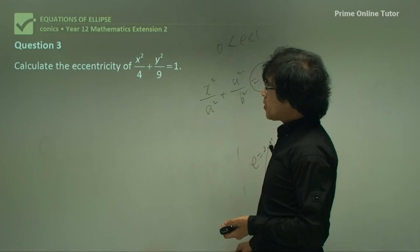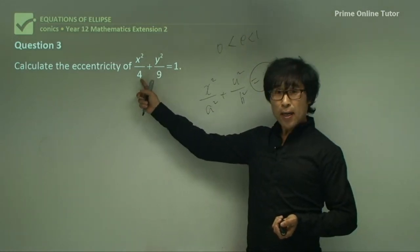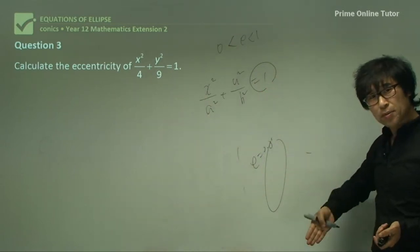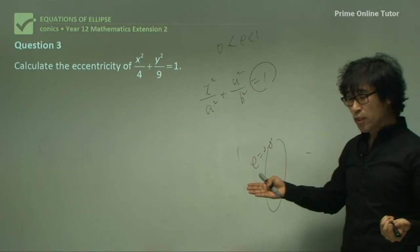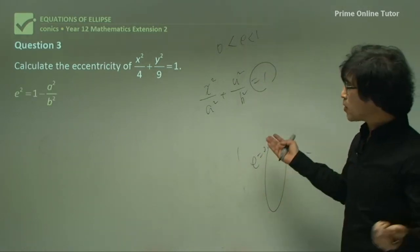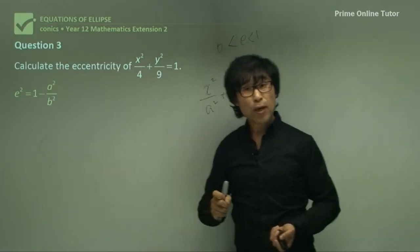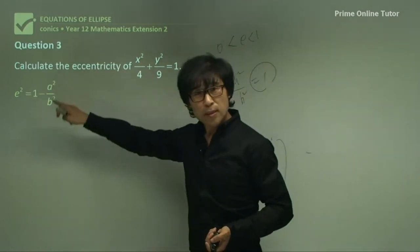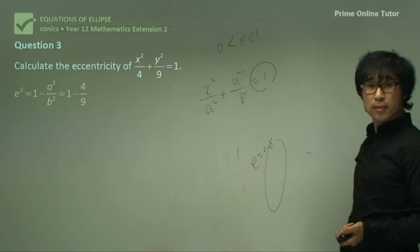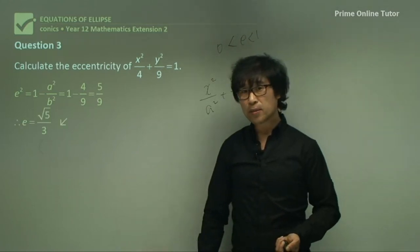Question 3: Here b² is larger than a², which gives a vertical ellipse — but the eccentricity value remains unchanged. Because a² is less than b², we take the smaller one over the larger one: 4/9. Simplifying gives √(5/9) = √5/3. The eccentricity is the same value: square root of 5 divided by 3.